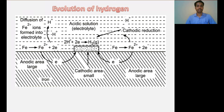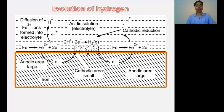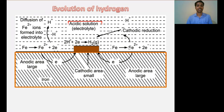In electrochemical corrosion, evolution of hydrogen type of mechanism may take place in an acidic solution. Let's assume this is the metal, and on the surface of the metal there is some impurity present — that may be dust particles accumulated on the surface or another metal part. This part of the metal is in contact with the acidic electrolyte solution.